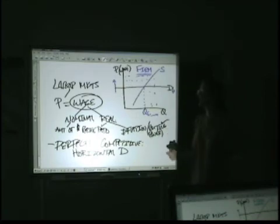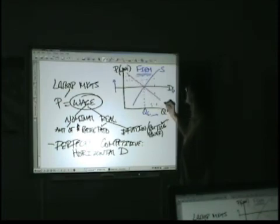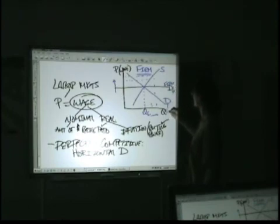Now demand facing the market, or facing the entire industry rather, is not going to be flat like this. The market demand is going to slope down. So this is demand for the firm. This is demand for the industry. Now why does demand for the industry slope down?